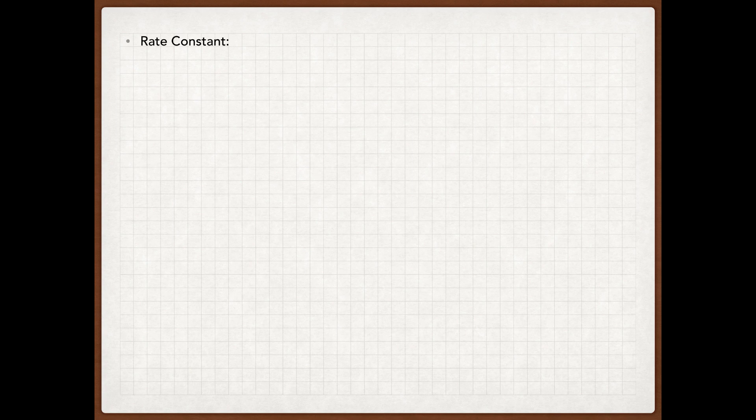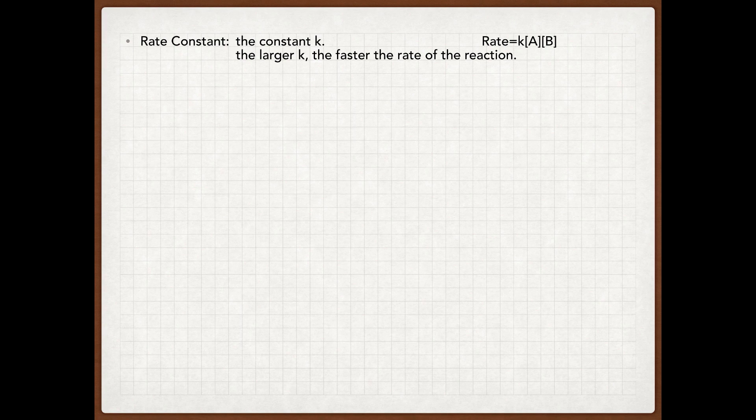Let's look at your rate constant, which is your K. So if you look at this rate law example — rate equals K times your concentration of A times your concentration of B — it makes sense that the larger your K, the faster your reaction rate is going to be, while the smaller your K, the slower your reaction rate is going to be, since they are clearly directly related. When K goes up, your rate goes up; when K goes down, your rate goes down.